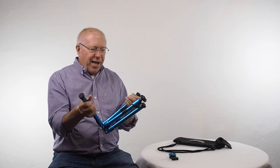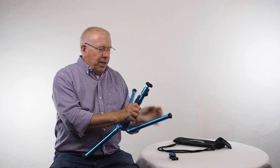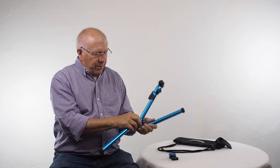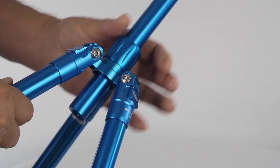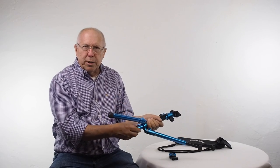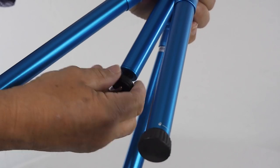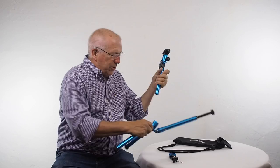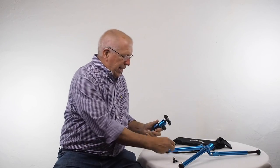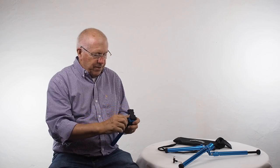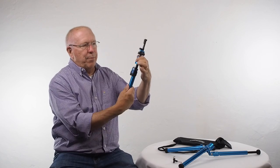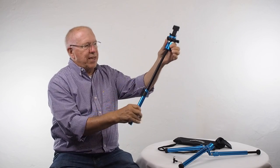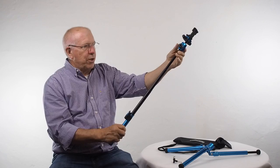The thing that is well thought out in this is that you can remove this center post simply by loosening this knob at the top of the feet, and removing the hook attachment, and taking the center post out, and adding your phone attachment or holder.